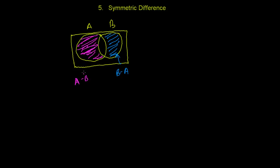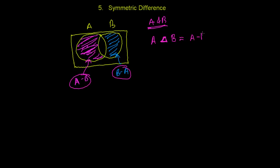I hope you understand what is A difference B and what is B difference A. So symmetric difference of A and B is written as A delta B — keep in mind, delta is like a triangle. A delta B means the union of A difference B and B difference A. It is the union of (A difference B) union (B difference A). That's it.